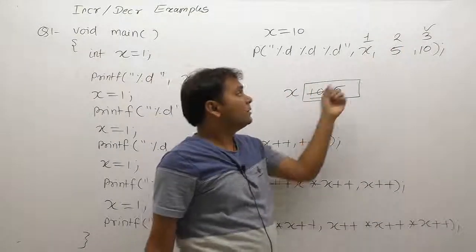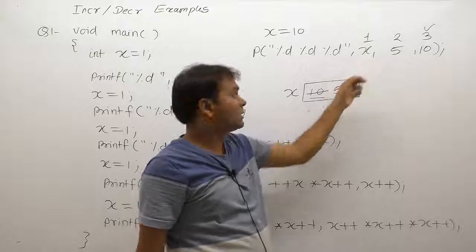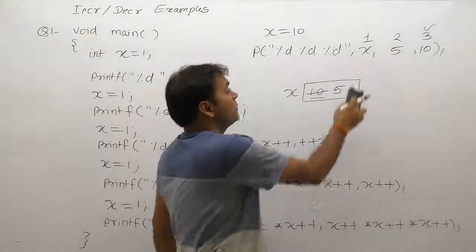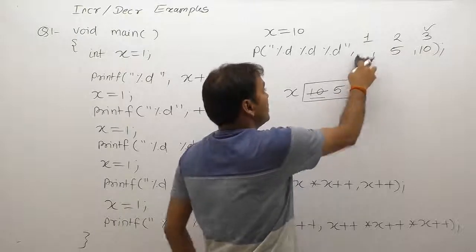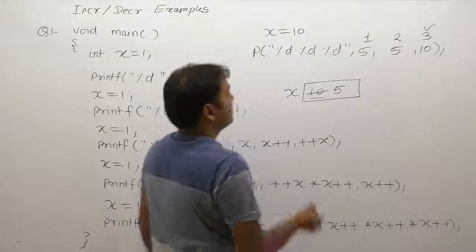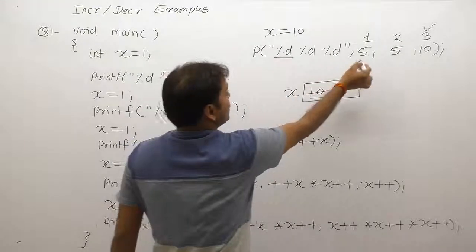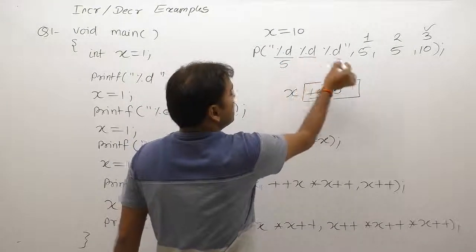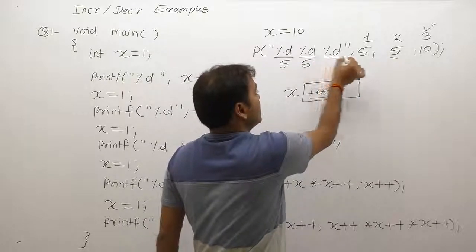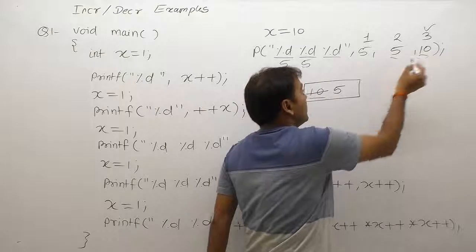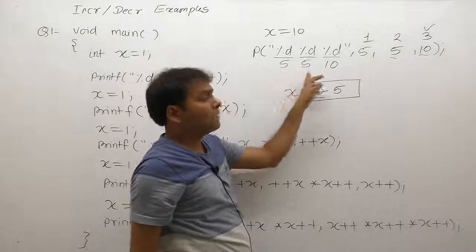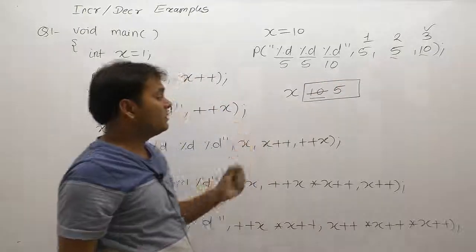Solving the first expression: the result is 5. The second expression is also 5. The third percent d is replaced by the third argument, which is 10. So the final output is 5, 5, 10.